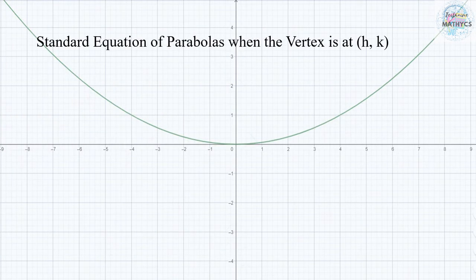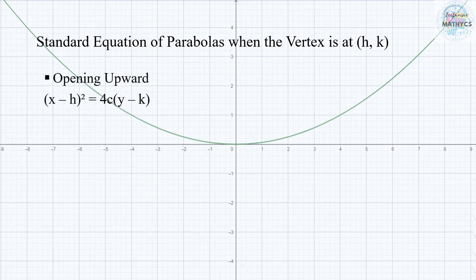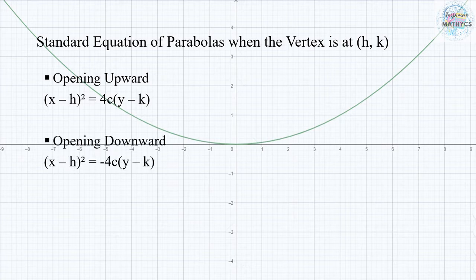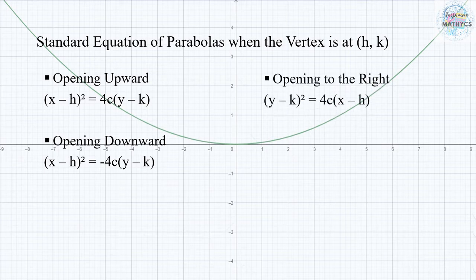Here are the standard equations of parabolas when the vertex is at (h, k). A parabola opening upward has an equation of (x minus h) squared equals 4C times the quantity of (y minus k). A parabola opening downward has an equation of (x minus h) squared equals negative 4C times the quantity of (y minus k). A parabola opening to the right has an equation of (y minus k) squared equals 4C times the quantity of (x minus h).